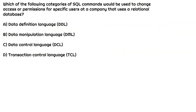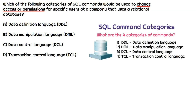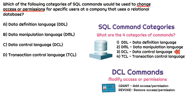This question asks which category of SQL commands would be used to change access or permissions for specific users at a company that uses a relational database. The four main categories are data definition language, data manipulation language, data control language, and transaction control language. The correct category is DCL — data control language. The two main commands are grant and revoke: we can either add access permissions or remove them. That is how we control the data and ensure proper security. So the correct answer is data control language.